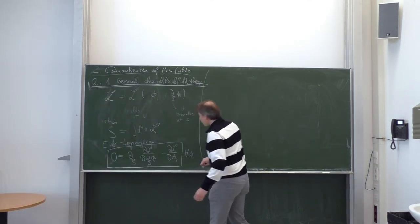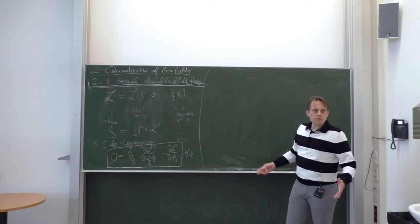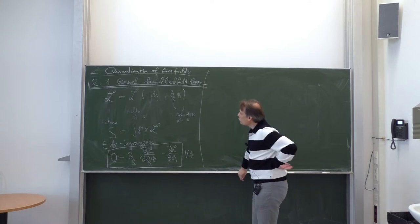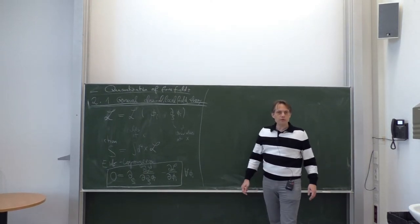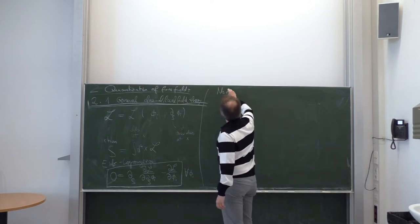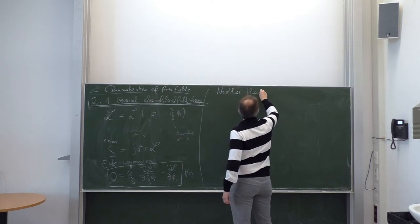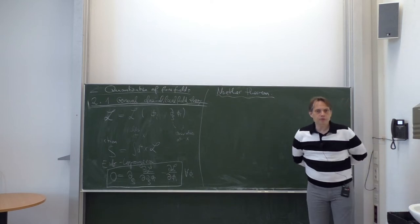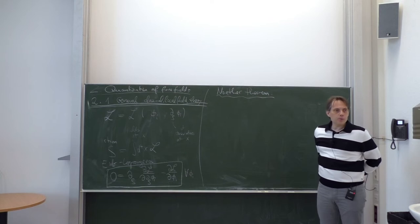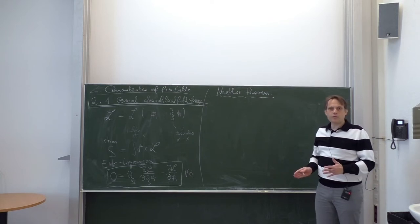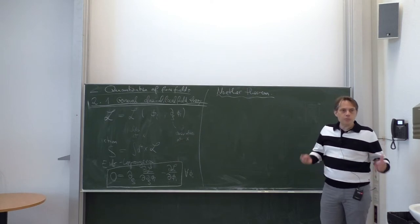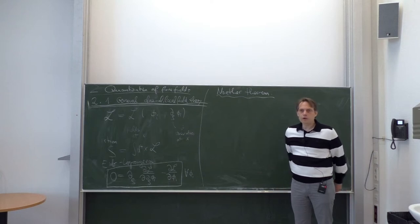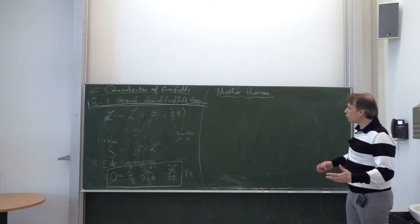That is the basis of classical field theory. We will discuss many examples of concrete field theories — scalar field, vector field, spinor field — later on. What I want to show you now is the Noether theorem, which is one of the most important theorems in theoretical physics. It gives a relationship between symmetries on the one hand and conserved quantities on the other hand. The construction of concrete theories such as the standard model and quantum electrodynamics are often based on symmetries, and the importance of symmetries is derived from the Noether theorem.